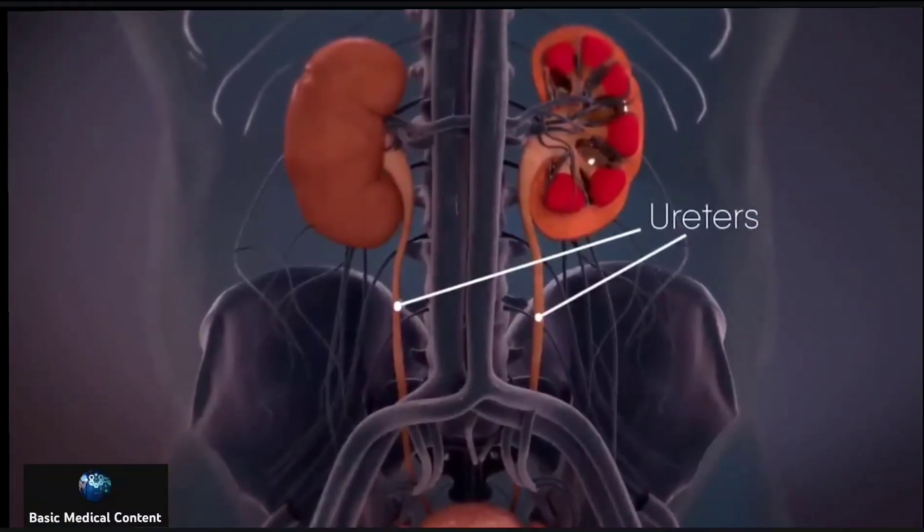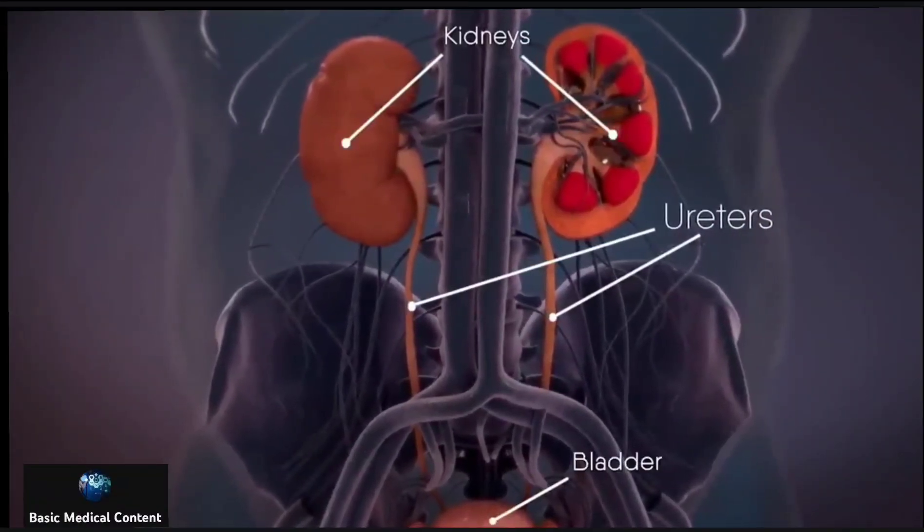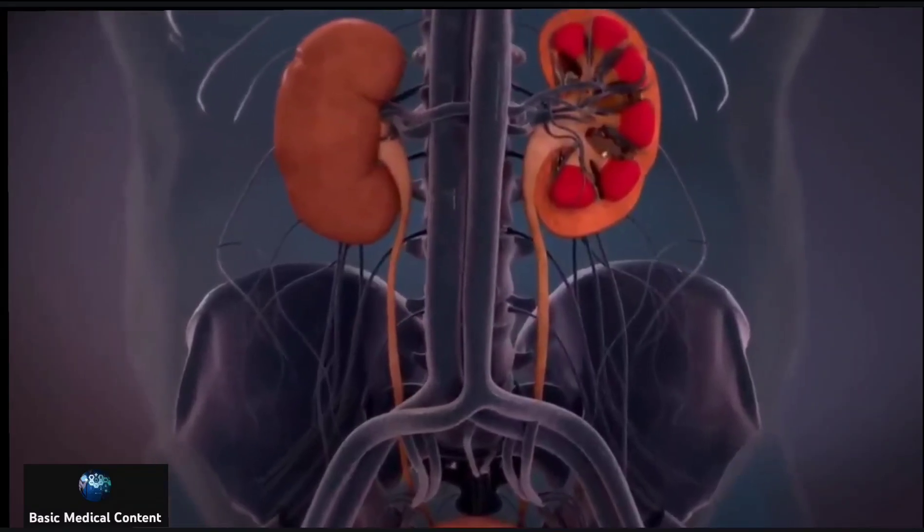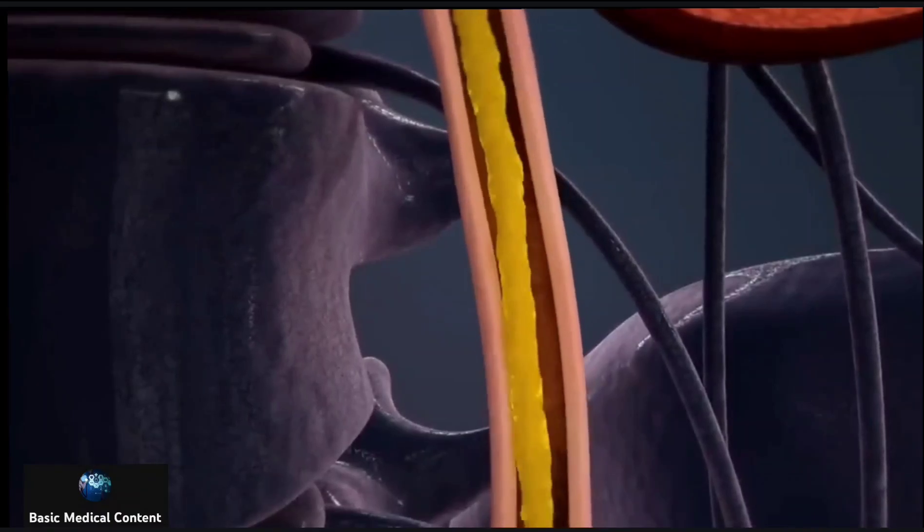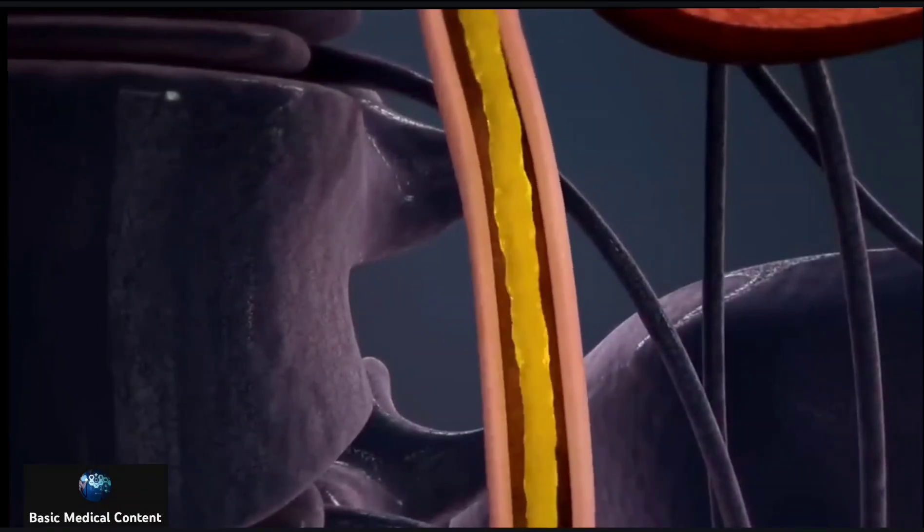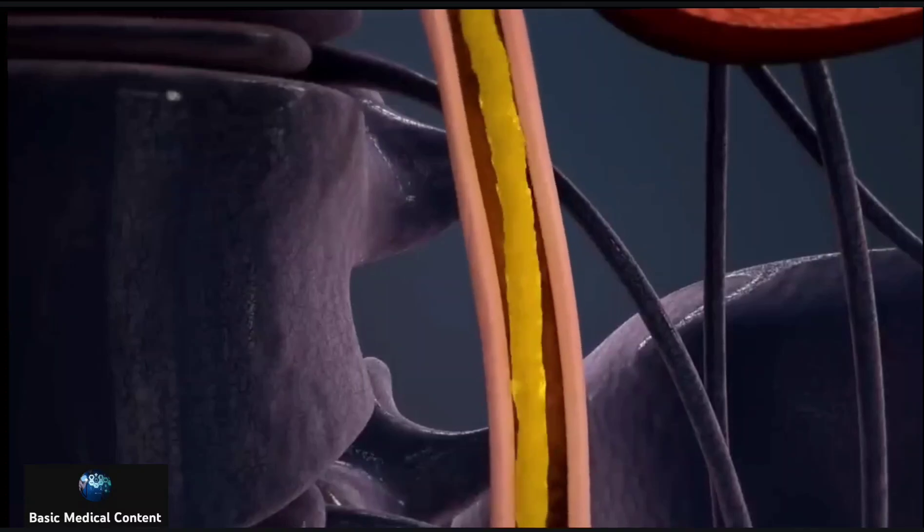The ureters are narrow tubes that carry urine from the kidneys to the bladder. Muscles in the ureter walls continually tighten and relax, forcing urine downward, away from the kidneys, not allowing them to back up or stand still.